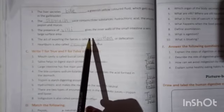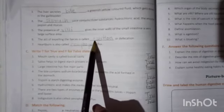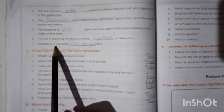Now the sixth one, the act of expelling the faeces is called, the answer is egestion. E-G-E-S-T-I-O-N. Seventh one, heartburn is also called esophageal reflux. O-E-S-O-P-H-A-G-E-A-L. Esophageal reflux.